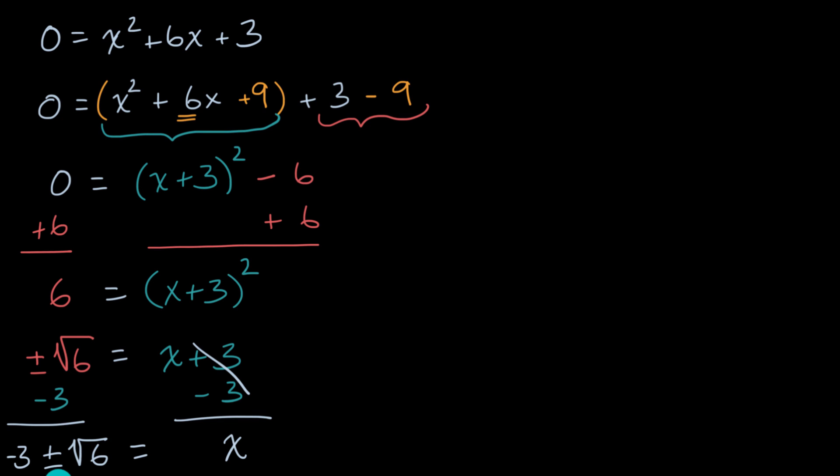And we are done. And obviously we could rewrite this and say, x could be equal to negative three plus the square root of six, or x could be equal to negative three minus the square root of six.